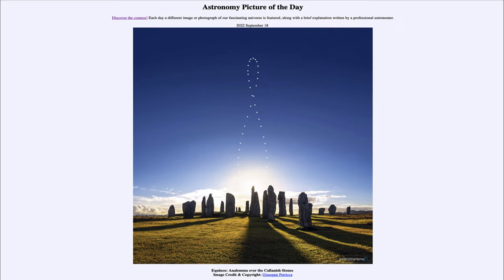So what do we see here? In the foreground, we see the Callanish Stones in very northern Scotland. They may have some kind of astronomical significance, such as those at Stonehenge. But really, we don't know, mainly because many of these Stone Age monuments — in fact, all of them — don't have any kind of instructions left behind telling us about their intentions or why they were made.